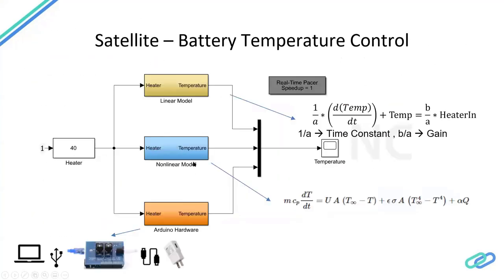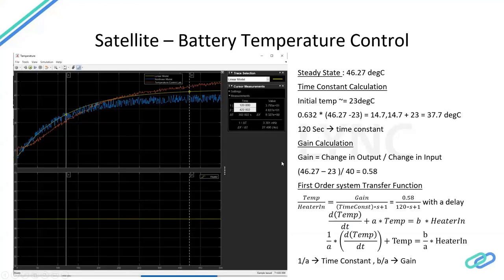So we have three models: equation-based (physics), actual hardware measurement, and the system identification model. Let me show in the next slide how we designed the linear model. I'm giving the same input across two models and the hardware to compare temperature outputs. On the left-hand side — hopefully readable — the yellow line is the linear model, the blue line is the non-linear equation-based model, and the red line is the temperature control lab, meaning the actual hardware.